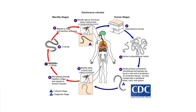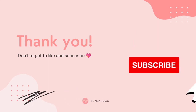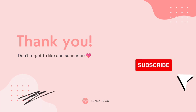Onchocerca volvulus follows the same lifecycle pattern, with the black fly playing the same role as mosquitoes do for Wuchereria and Brugia malayi. Adults are found in subcutaneous tissues, and microfilariae are typically found in the skin and lymphatics of connective tissues, but occasionally in peripheral blood, urine, and sputum. Thank you for listening. If you have any questions or clarifications, please message me at the provided email.